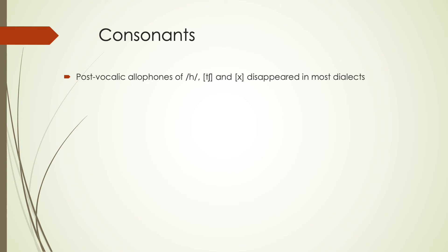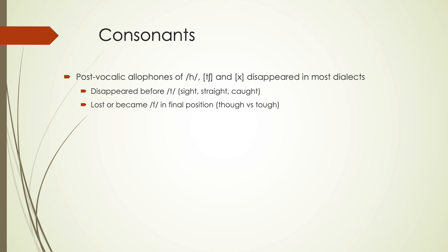Thinking about consonant changes — there are a lot of smaller changes that happened. The post-vocalic allophones of H — CH and CH — disappeared in most dialects. We either don't pronounce it at all or pronounce it as H. It completely disappeared before T in words like 'sight,' 'straight,' 'caught.' It was lost or became F in final position — so 'though' versus 'tough.' Those GH spellings don't always clearly indicate when they change. Sometimes it's lost as in 'though,' sometimes it becomes F as in 'tough.'